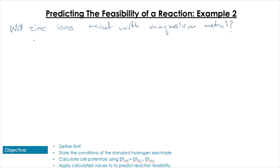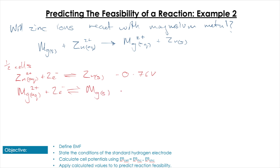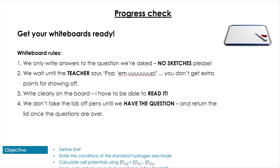Let's try another example: zinc ions with magnesium. Zn²⁺ + 2e⁻ → Zn gives minus 0.76 V, and Mg²⁺ + 2e⁻ → Mg gives minus 2.37 V. Magnesium is going in the other direction in our overall equation, so we flip its sign. This gives us −0.76 + 2.37 = 1.61 volts, which is positive and therefore a feasible reaction.